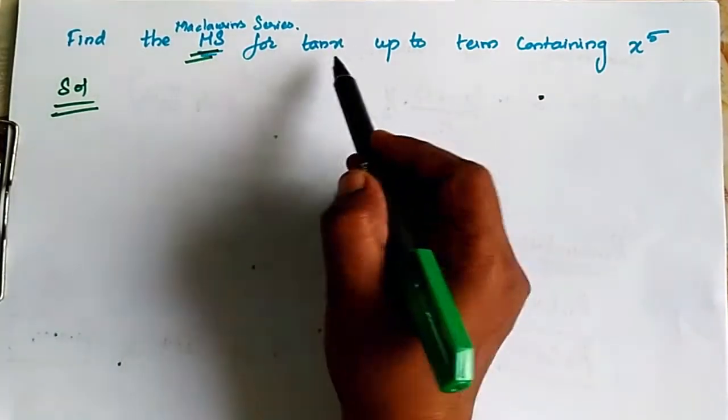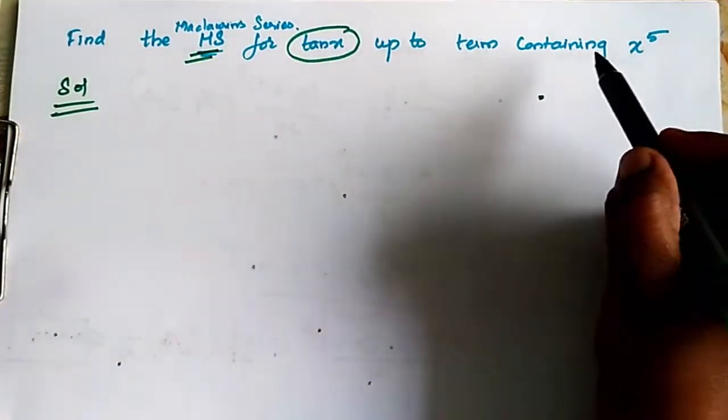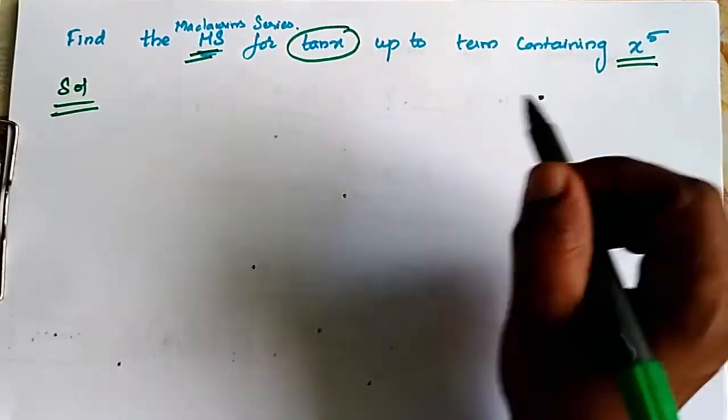Find the Maclaurin series for tan x up to term containing x power 5.